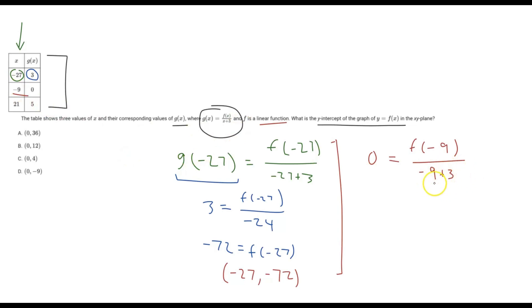And would you look at that, whatever we do here, it doesn't matter. That's negative 6. But when we multiply 0 by negative 6, we still get 0. And so 0 equals f of negative 9. That's our second coordinate point.